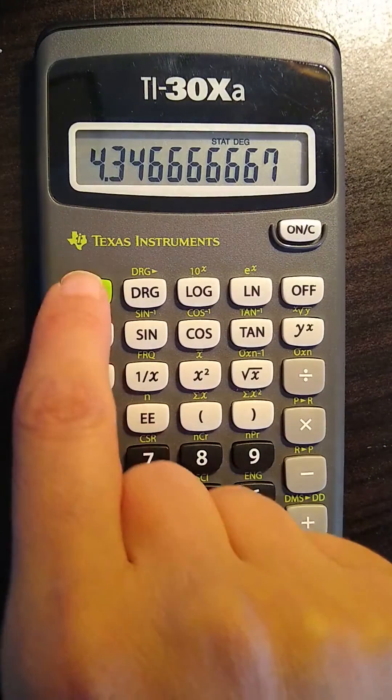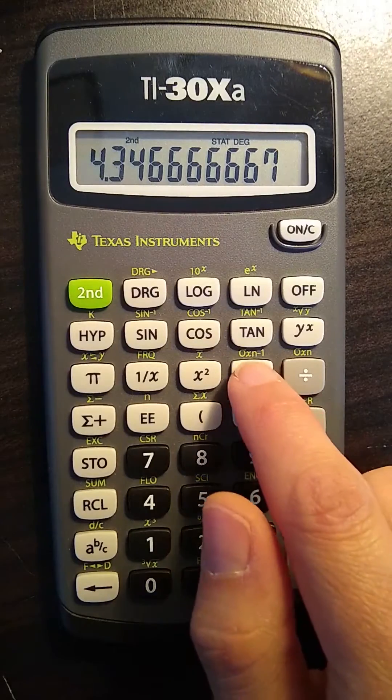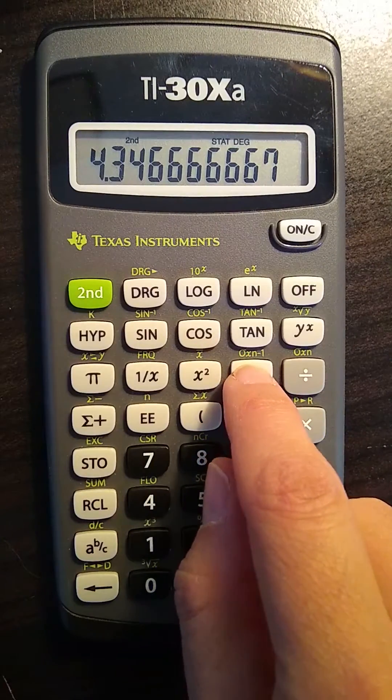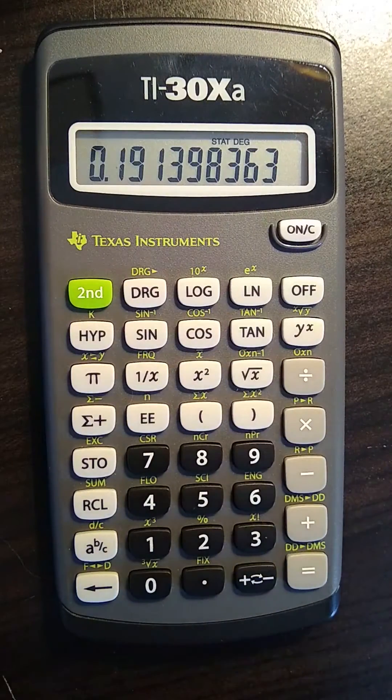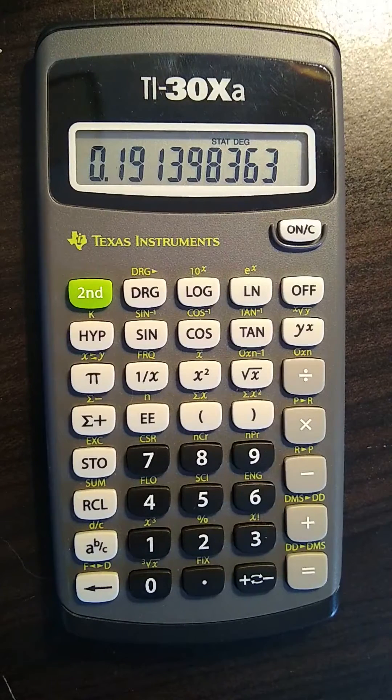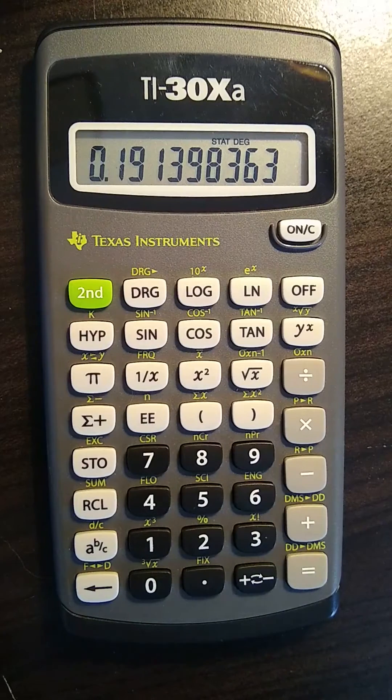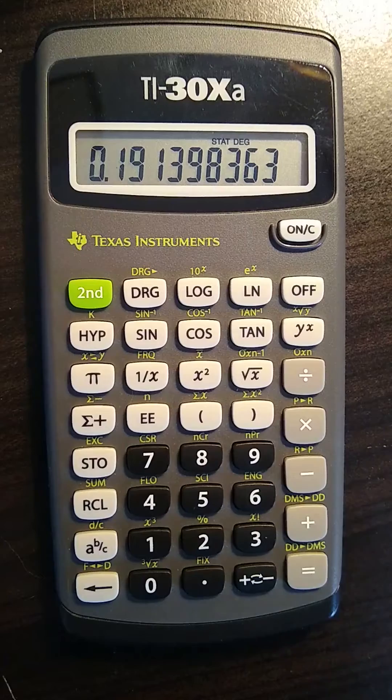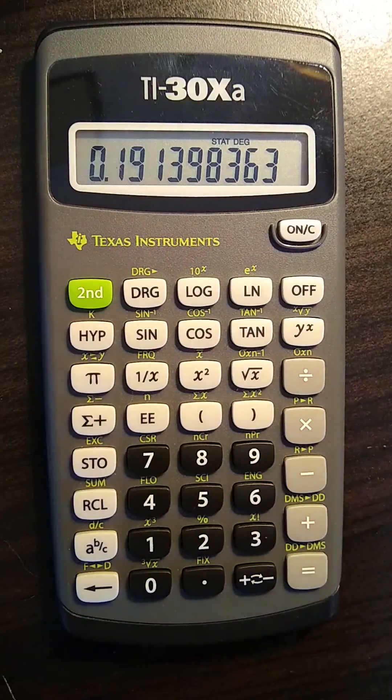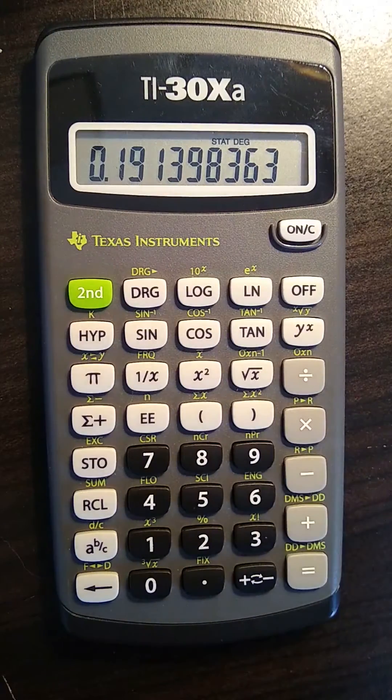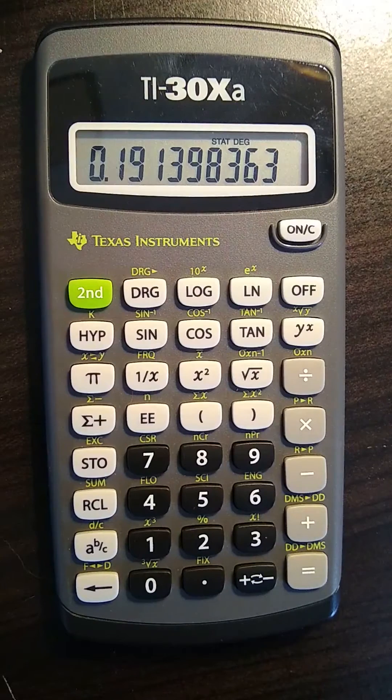If you want to find the standard deviation, it's second and then the sigma x n minus 1. So that's the standard deviation for a sample of a small data set. If you wanted the population, it is the next one, but we very rarely use that in analytical chemistry.